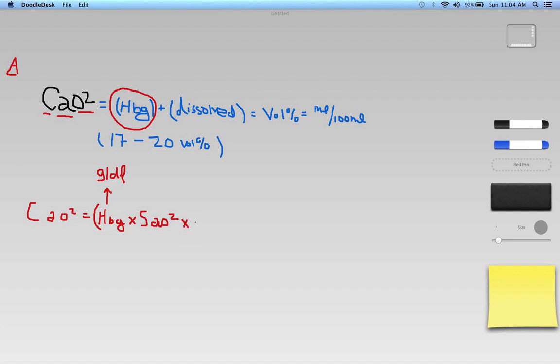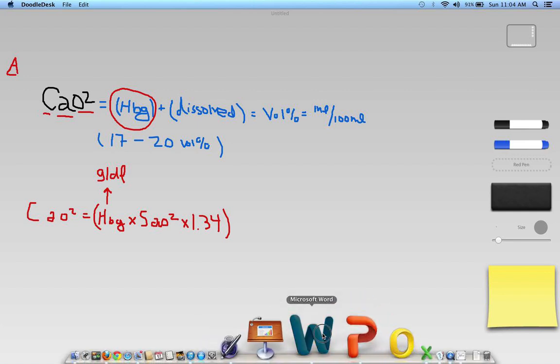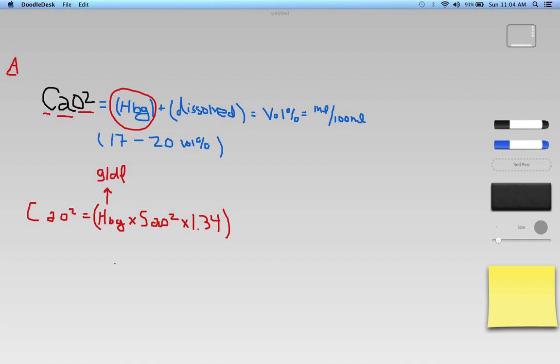And then I need to multiply that by a coefficient. And that is basically my hemoglobin coefficient, and that is 1.34. What that coefficient does is that says that for every gram of fully saturated hemoglobin, every gram of fully saturated hemoglobin can carry up to 1.34 milliliters of oxygen.